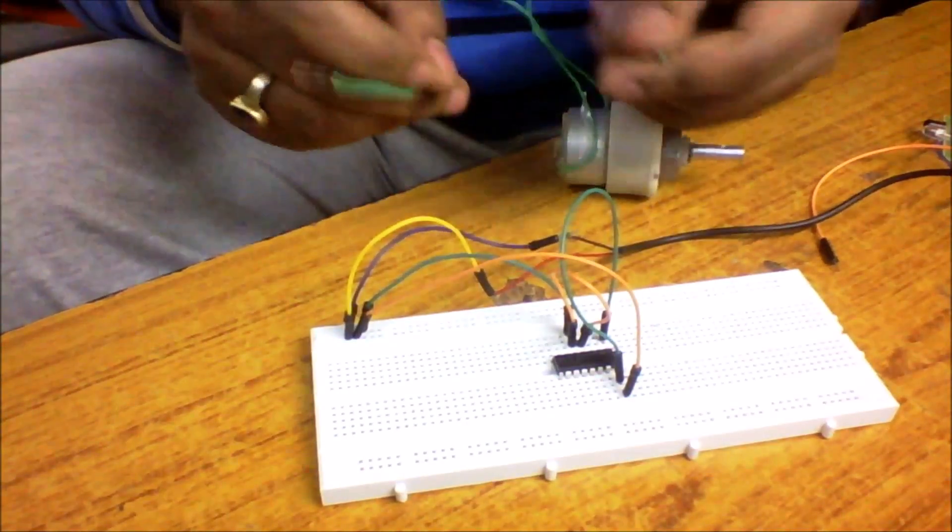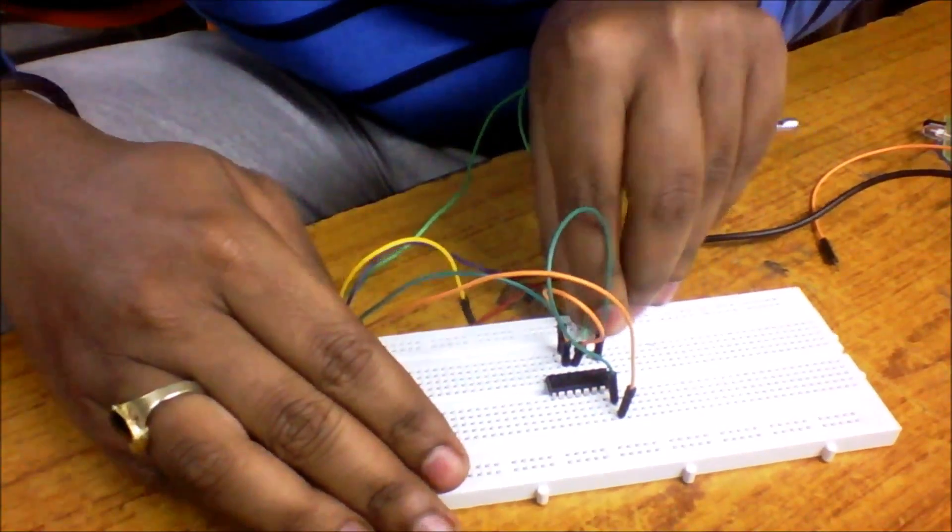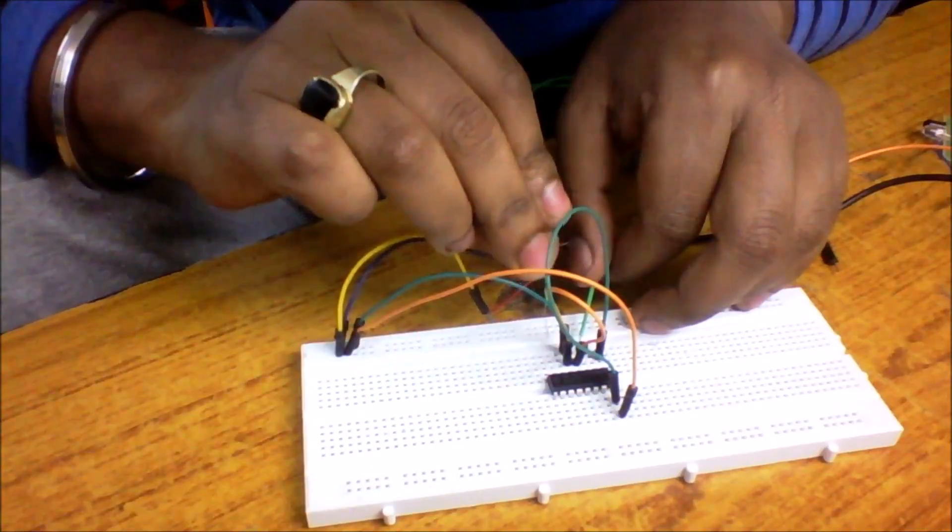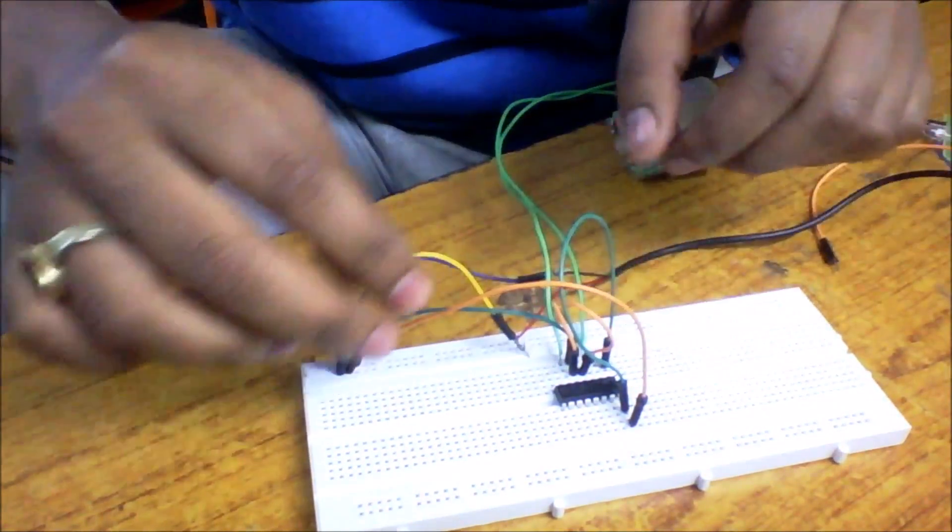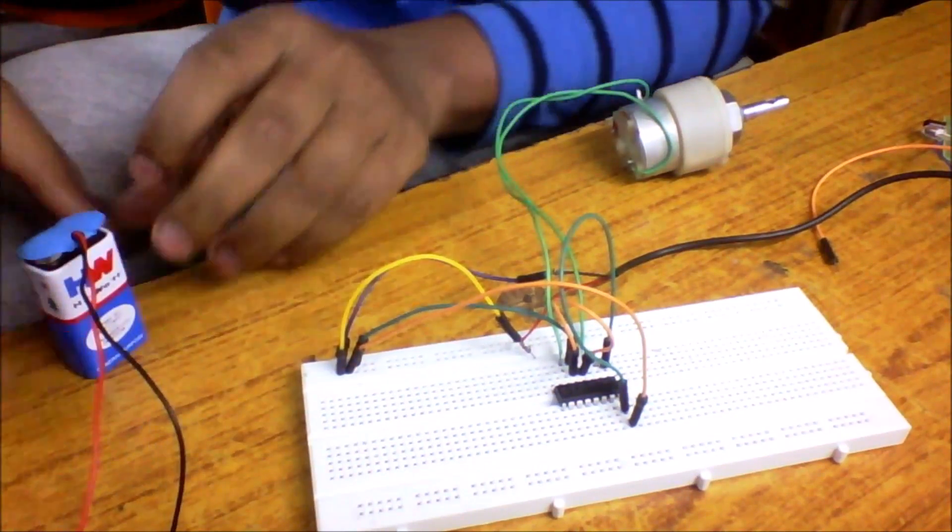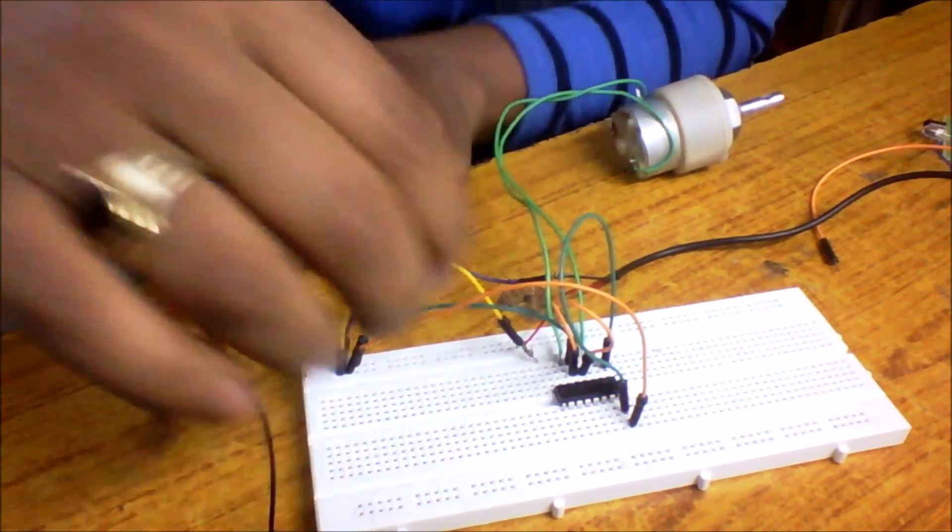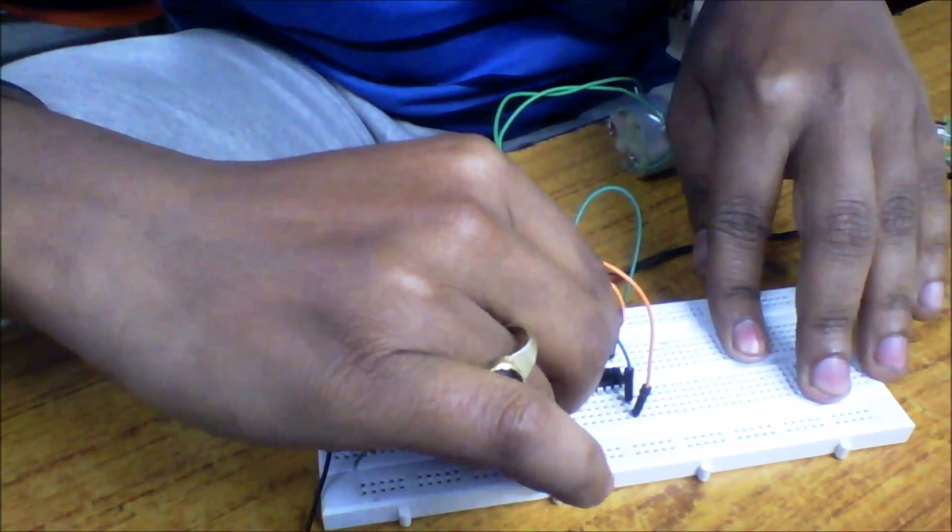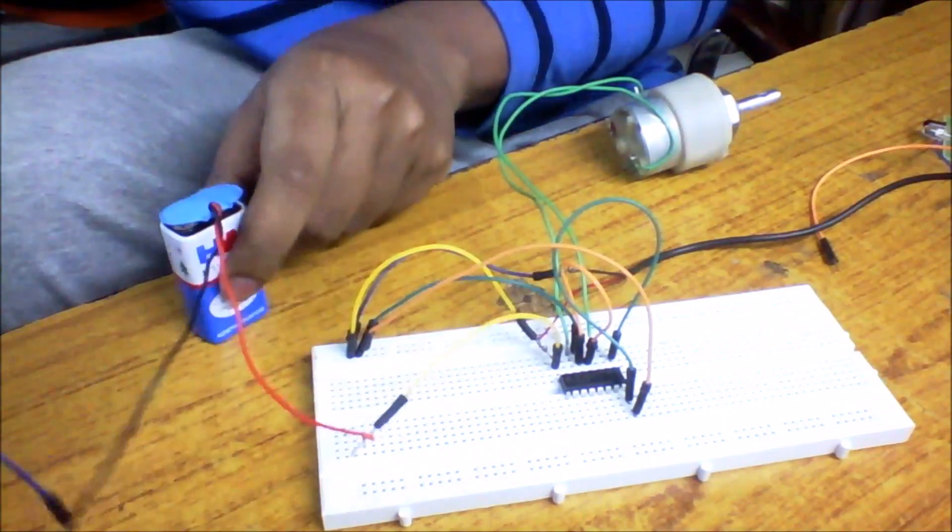Now pin number 8 is for the external supply, so I'm gonna use the 9 volt supply. I'll connect the positive terminal of this 9 volt supply to pin number 8, and the negative terminal to the ground. This is the negative supply - I'm just gonna connect it to the ground. Okay, it's done.